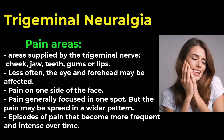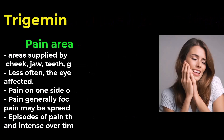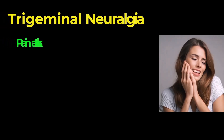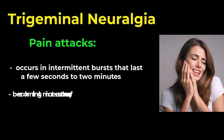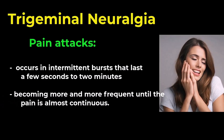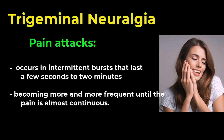As the disease progresses, the episodes of pain become more frequent and intense over time. The pain attacks occur in intermittent bursts lasting a few seconds to a few minutes, but as the disease advances, the attacks become more frequent and intense. When the disease is well progressed, the pain is nearly continuous because the attacks are so frequent and severe.